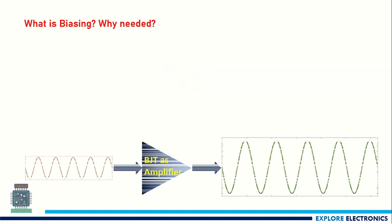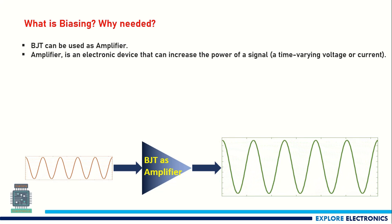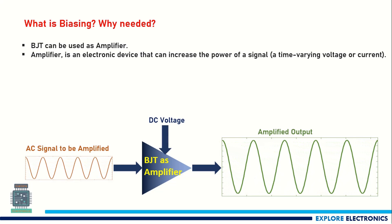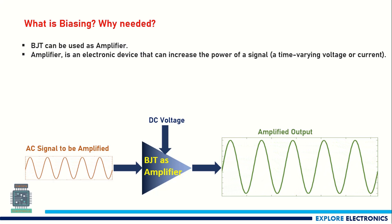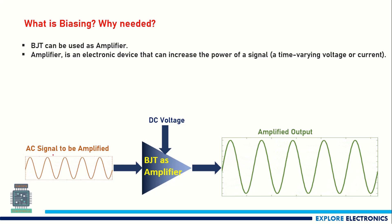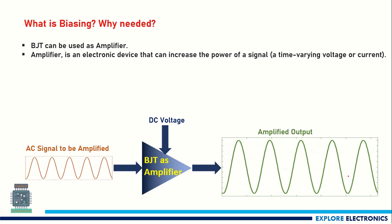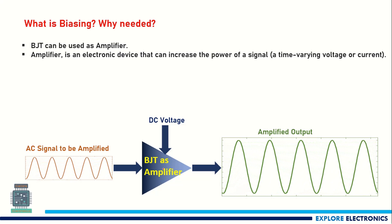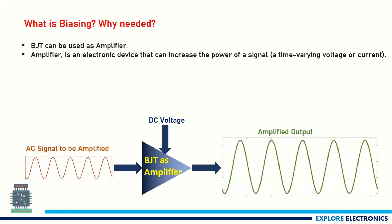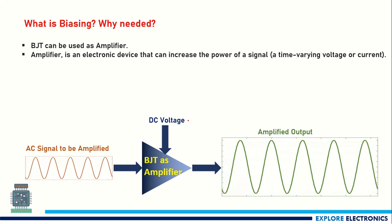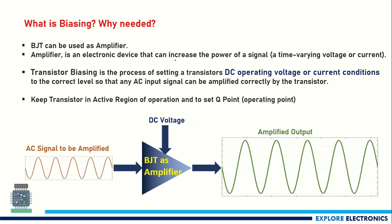First of all, what is biasing and why it is needed? As we know, BJT can be used as an amplifier. An amplifier is a device that increases the power of the signal. If we apply a time-varying AC input signal — the small signal to be amplified — it gets amplified into a large voltage or current at the output of the amplifier. But from where does the amplifier get the extra voltage to amplify the small signal? That is through biasing — through an external DC voltage applied to the amplifier.